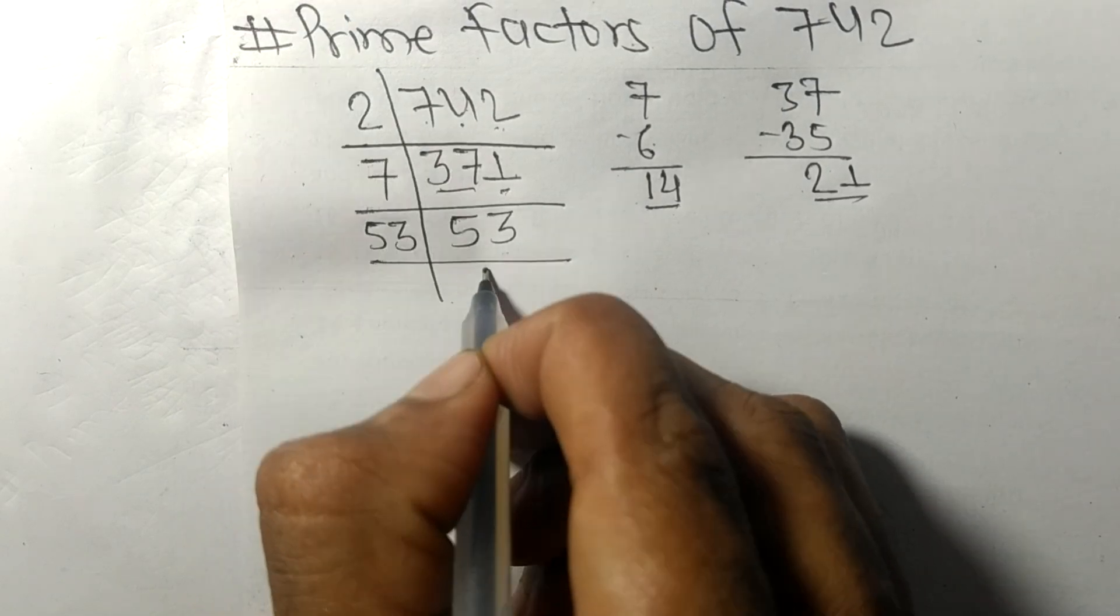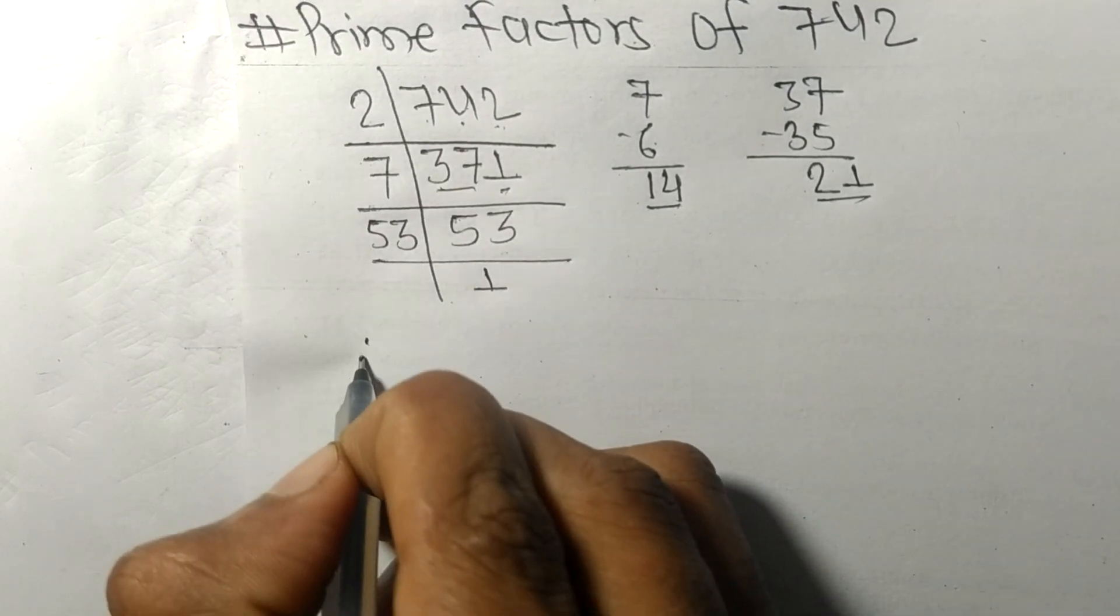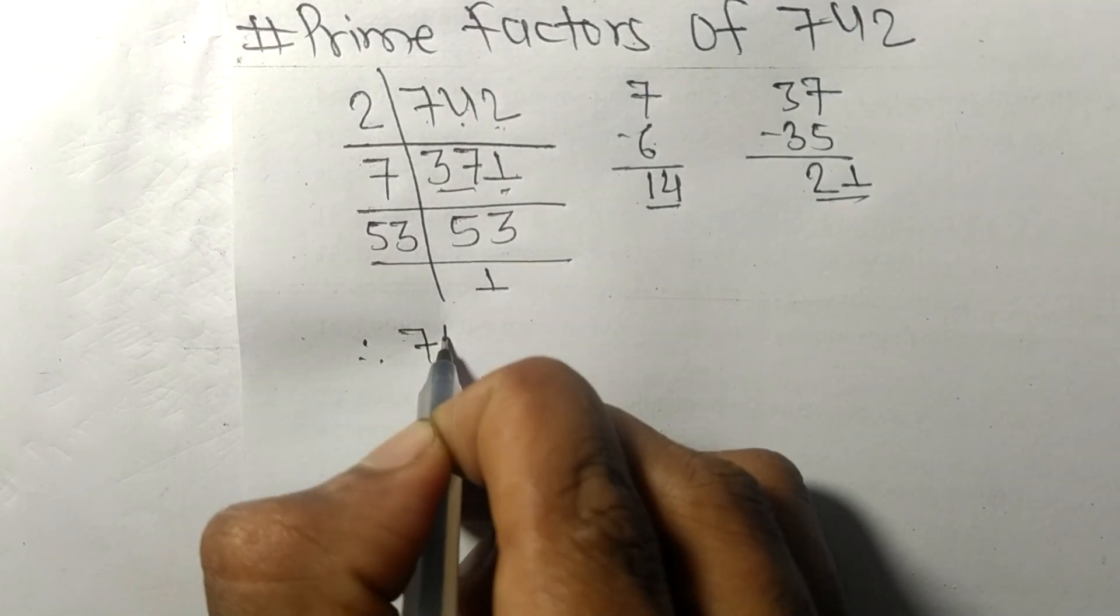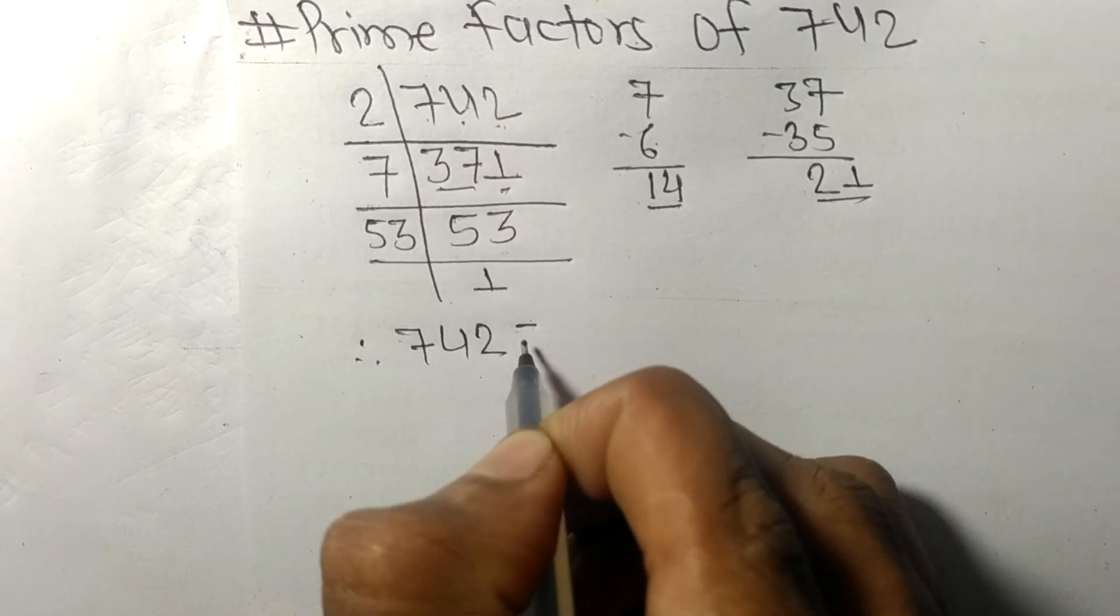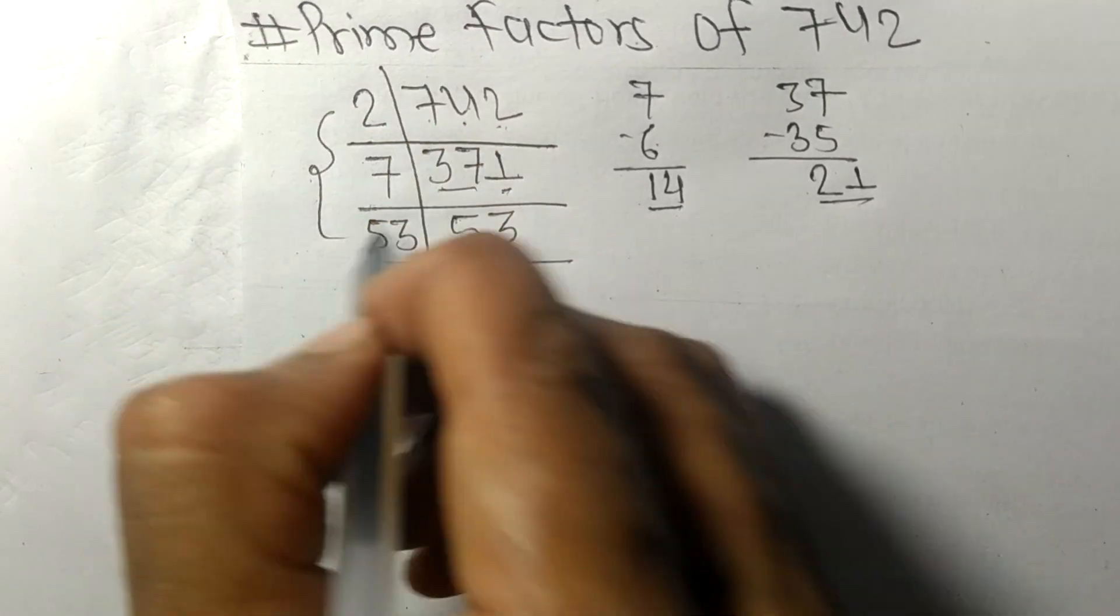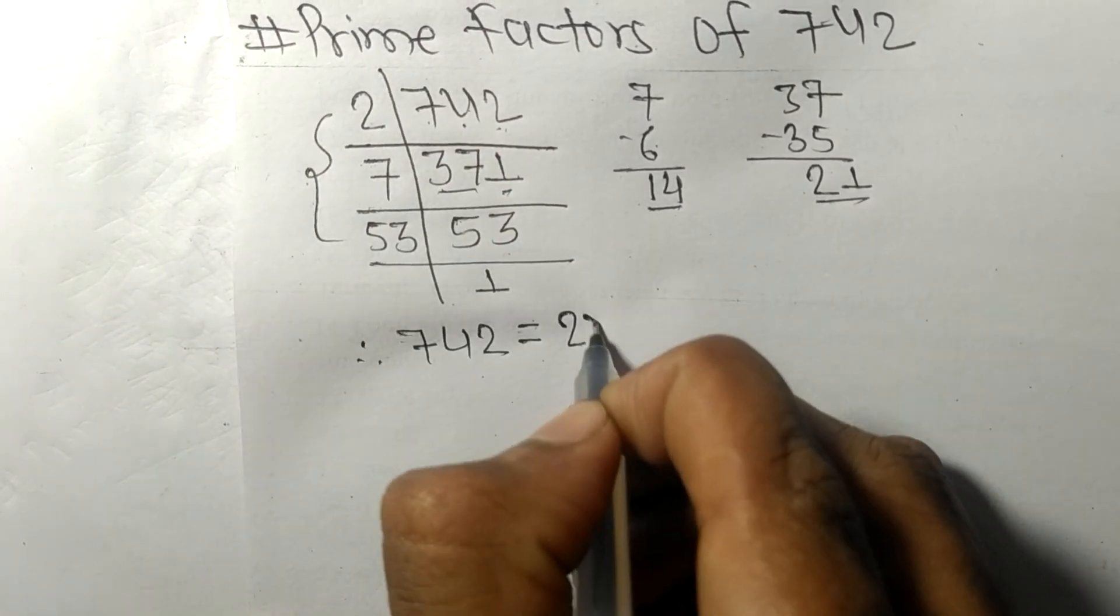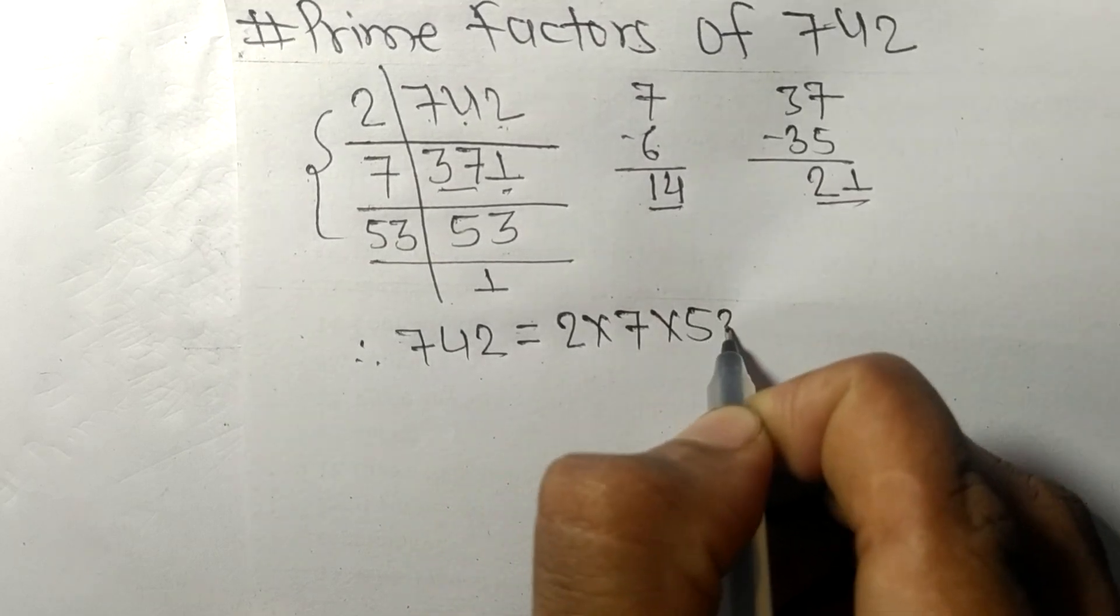On dividing we get 1. Therefore 742 is equal to 2 times 7 times 53.